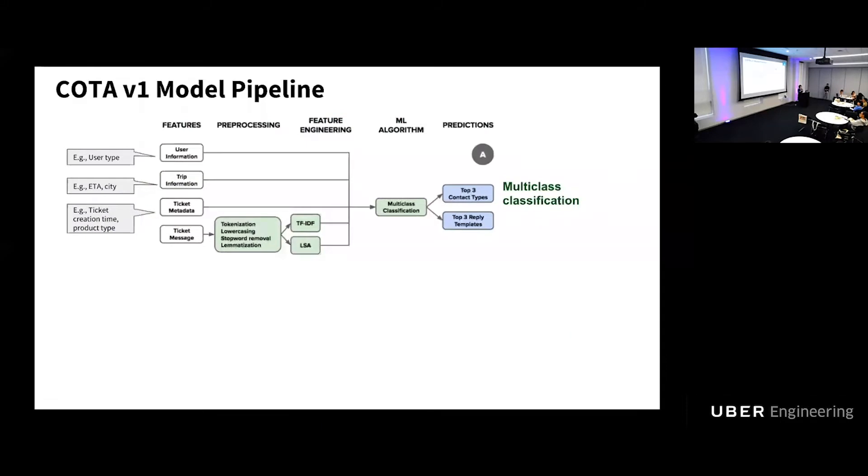Here's how we build this. Now our problem becomes, given the ticket, we want to build a model to predict its content type or its reply template. The most intuitive way and also the first approach that we try is to build a multi-class classification model. To do so, given the ticket, we'll firstly convert them into four types of features. User information, example of user information can be user type such as driver, rider, or eater. For example, driver is not going to submit a ticket saying my driver never showed up, because he's the driver, which can be useful information in our model. After that is the trip information that include estimate of arrival or city ID. Different trips happen in different cities associated with different policies, which can be also informative for our model. And ticket metadata can be ticket created time or product type. A ticket submitted through Uber Pool should not have a content type like my food is cold when I got it, that's more Uber Eats ticket.